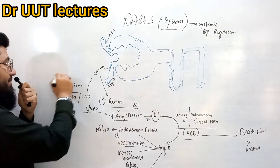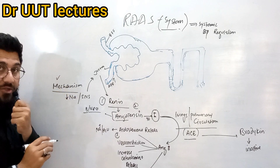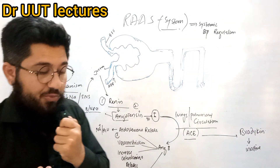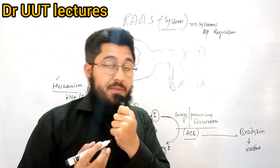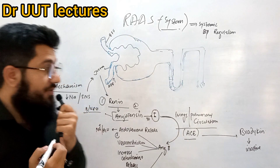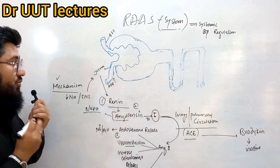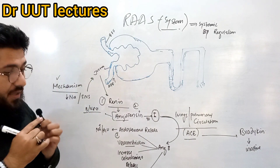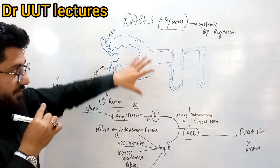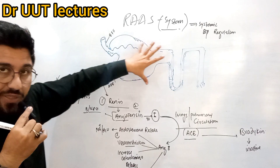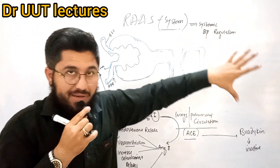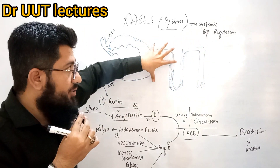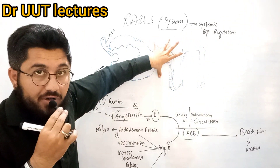Now let's come to the next point — the mechanism. How is this RAS system doing its job? First, I would love to tell you a little bit about the functional unit of the kidney, which is the nephron.